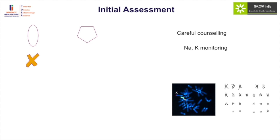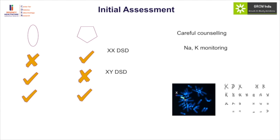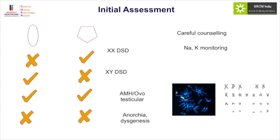Assessment of gonads and mullerian structures helps with initial classification. If gonads are absent and mullerian structures are present, this is a classical case of XX DSD — exclude congenital adrenal hyperplasia. If gonads are present and there are no mullerian structures, it is XY DSD — look at steroidogenic defects, resistance defects, or gonadal dysgenesis. If both gonads and mullerian structures are present, it indicates a complex situation of either AMH problem or ovotesticular DSD. If neither testes nor mullerian structures are present, it suggests testes were present and functional at some point, indicating anorchia or testicular regression.